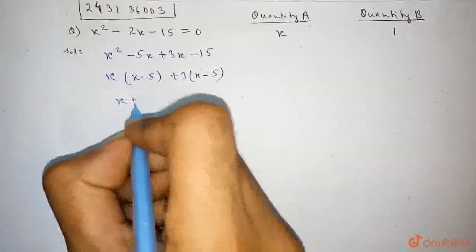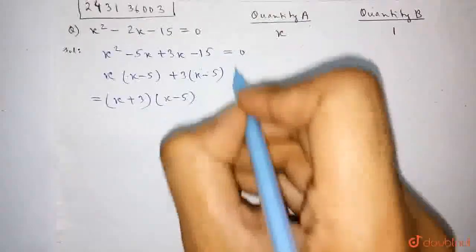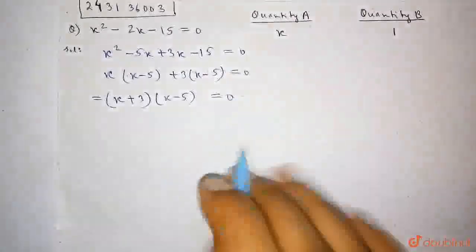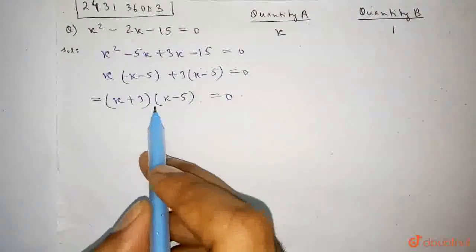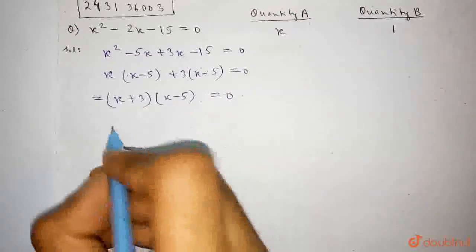Now x plus 3, it equals x plus 3 into x minus 5, which equals 0, as given. Now, x plus 3 into x minus 5 equals 0. So either x plus 3 is 0 or x minus 5 is 0.